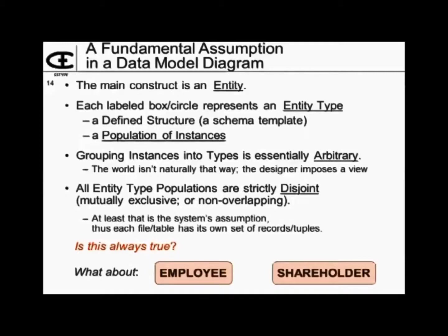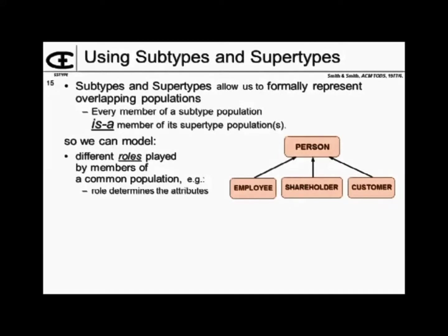We know that strict disjointness is not always true with this example. So when do you use subtypes and supertypes? They allow us to formally represent overlapping populations. The rule is: every member of a subtype must be a member of all of its supertypes. Therefore, we can model two kinds of things this way. One is we can model different roles that are played by members of a supertype population.